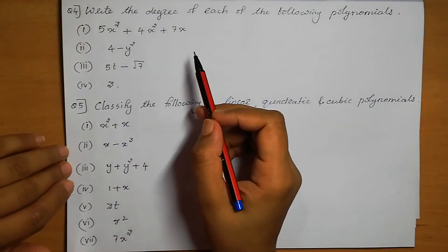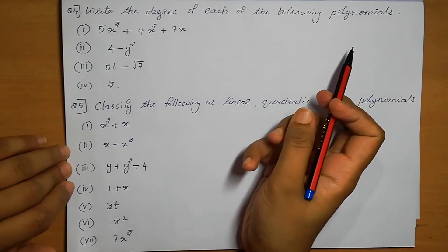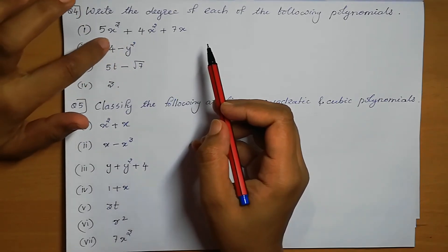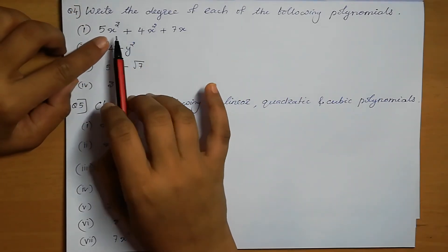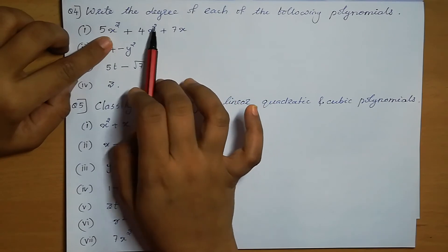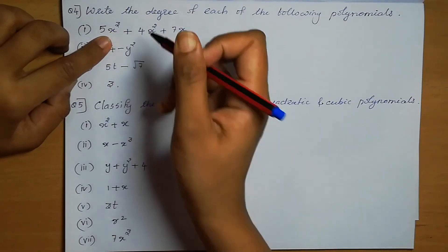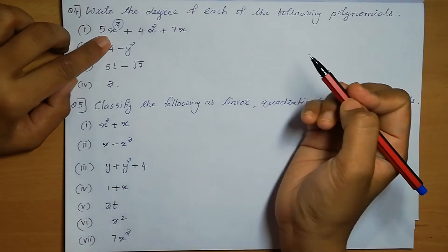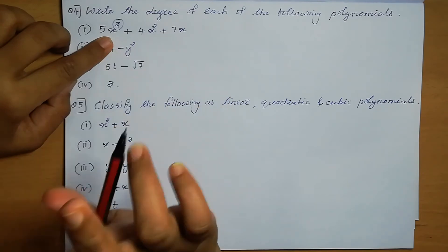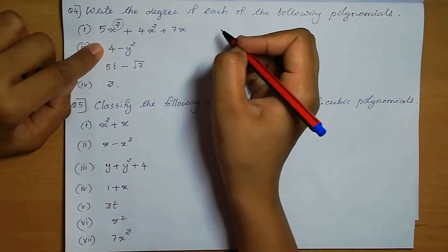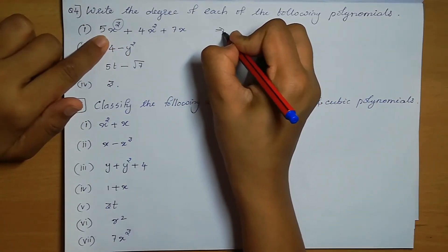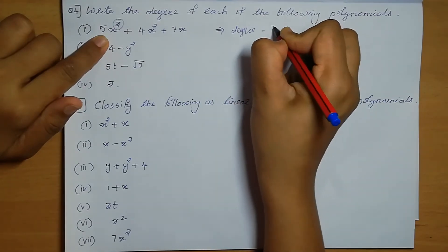Question number 4: Write the degree of each of the following polynomials. The degree means the variable with the highest power. For 5x cubed plus 4x squared plus 7x, the variable is x. The powers are 3, 2, and 1. The highest power is 3, so the degree of this polynomial is 3.